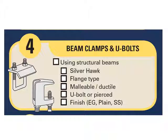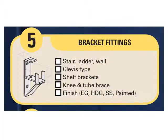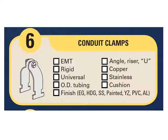Number four: beam clamps and U-bolts — fastens the channel to structural beams and supports. Number five: bracket fittings — fastens the channel to vertical planes, typically to create shelves for equipment or general storage. Number six: conduit clamps. Securing conduit and pipe overhead is perhaps the most common application for a strut system. Special clamps are available for the full spectrum of pipe and tube, from the very lightest conduit to the heaviest black pipe. These include EMT, rigid, universal, OD tubing, riser, copper, stainless, cushion, and U-clamps.